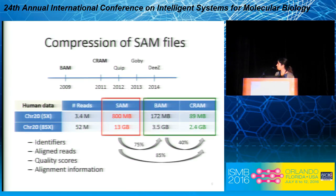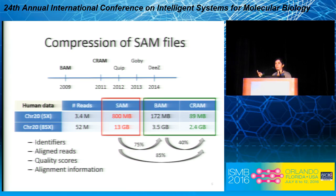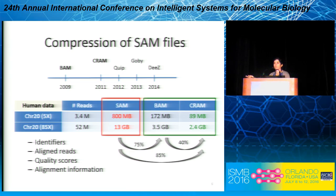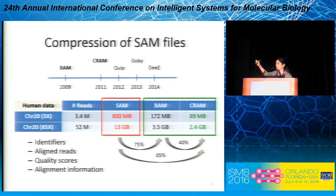In this talk, I'm going to focus first on compression of the SAM file and then move on to compression of the genotype information stored in the VCF files. There has been a lot of research in compression of SAM files. When you go online to download a SAM file, it's normally either in the BAM format, which is just a binary version of the SAM file, or in the CRAM format, which is a more specialized compression that is gaining popularity. CRAM can already achieve about 40% improvement with respect to BAM.